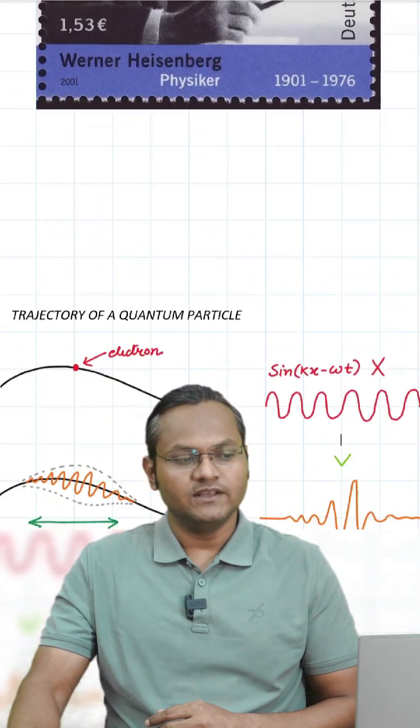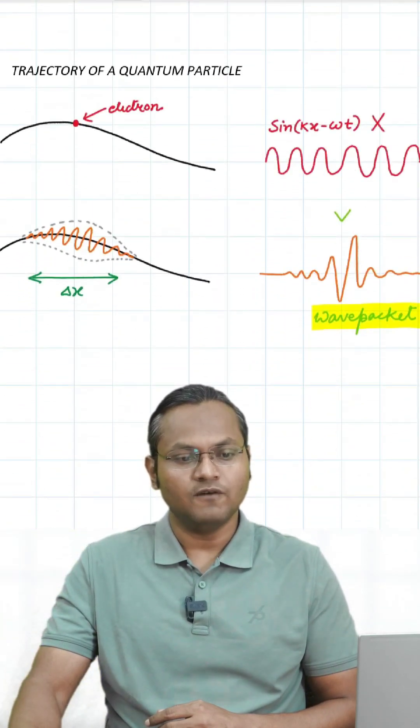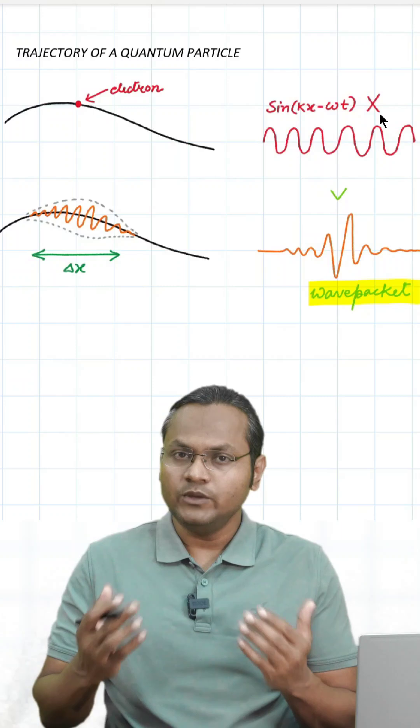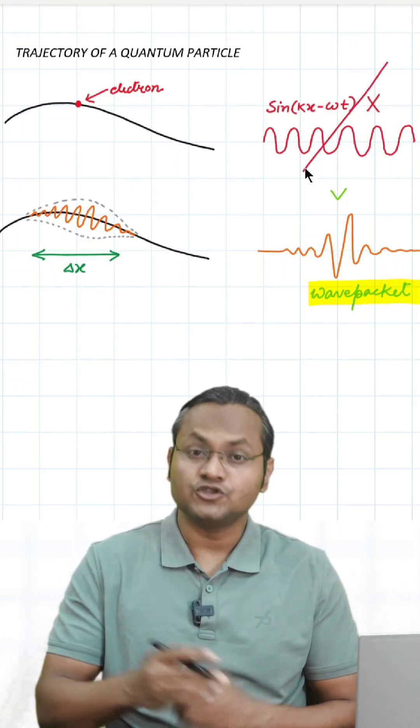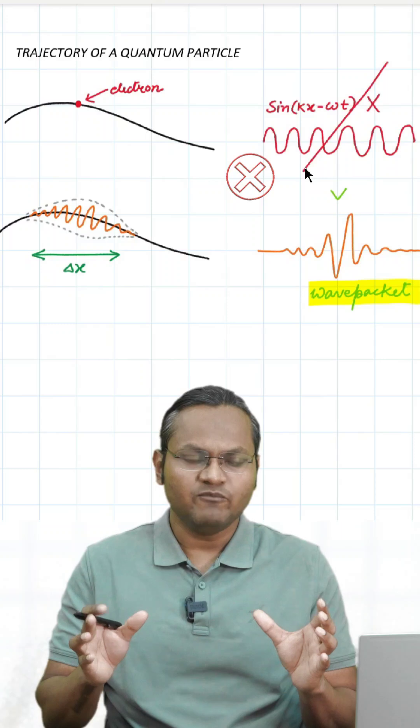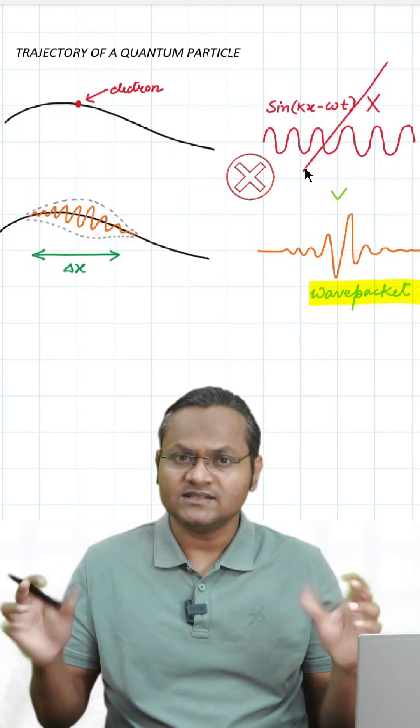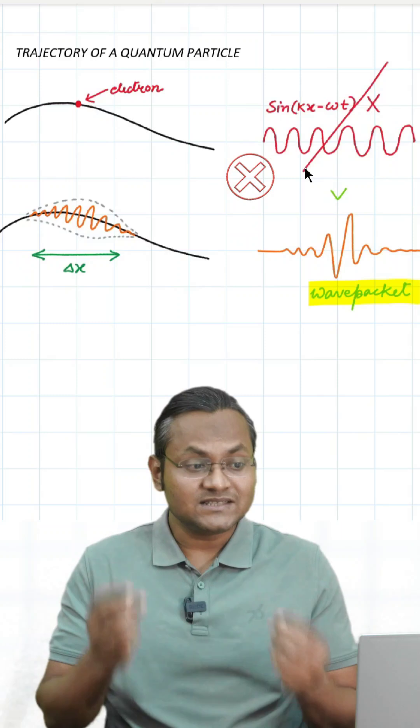A particle like an electron is best described by the motion of a wave packet. But the wave that we use to describe an electron is not a sinusoidal wave क्योंकि sinusoidal wave में amplitude constant रहती है, जिससे particle के position के बारे में कुछ पता नहीं चलता.